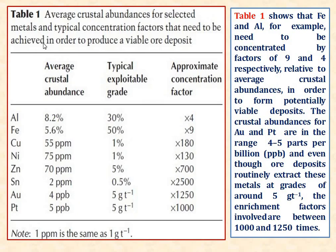This is a table showing the average crustal abundance for selected metals and typical concentration factors that need to be achieved in order to produce a viable ore deposit. For example, aluminum having 8.2% average crustal abundance, which is basically having 30% as a typical exploitable grade, which can approximate a concentration factor of 4.